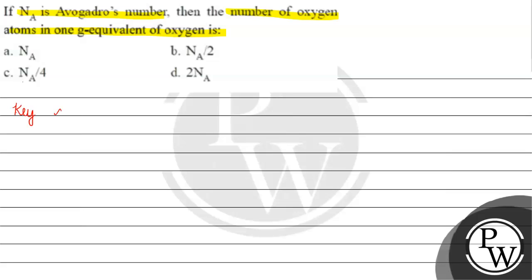The key concept for this question is: we are told one gram equivalent of oxygen. So, one gram equivalent of oxygen will be equal to 8 grams. How?